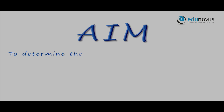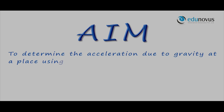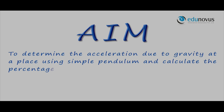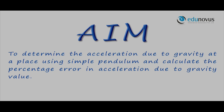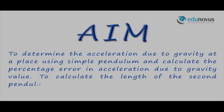To determine the acceleration due to gravity at a place using a simple pendulum and calculate the percentage error in the acceleration due to gravity value. Also, calculate the length of the seconds pendulum from the L-T-square graph.